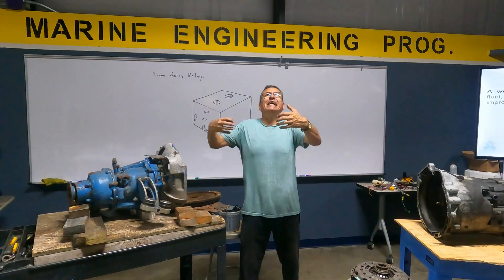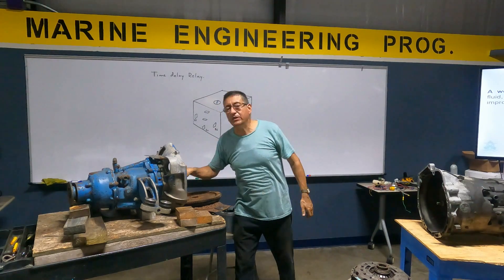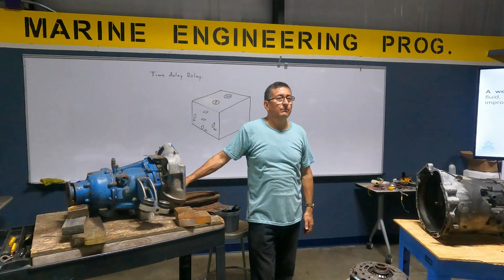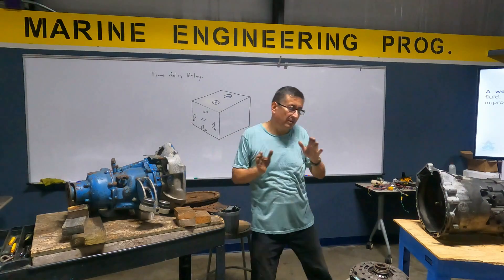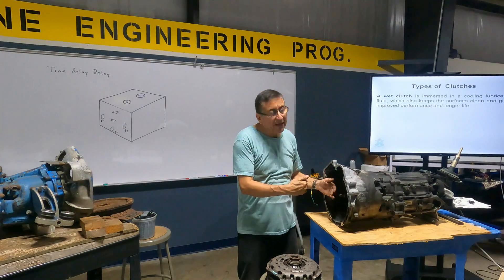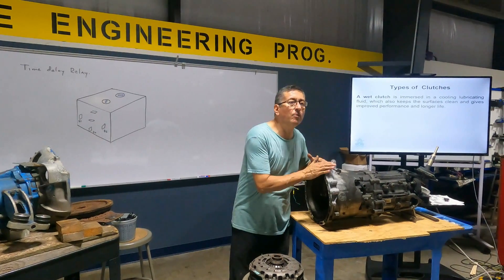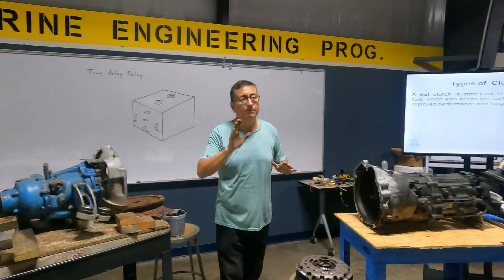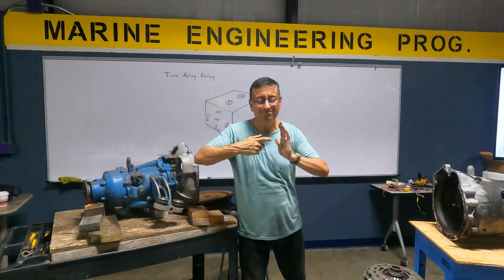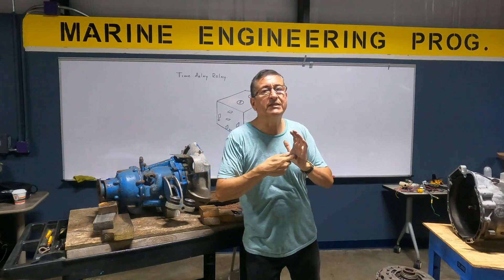In marine transmission, the crankshaft and the flywheel of the engine are always connected with the input shaft of the transmission. In automotive, no — the flywheel is separated from the input shaft. Only when the clutch engages do you connect both of them in automotive. In marine, the input shaft of the transmission is always in mechanical connection with the crankshaft of the engine. It's always attached.